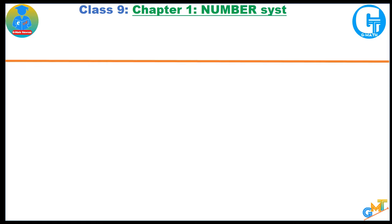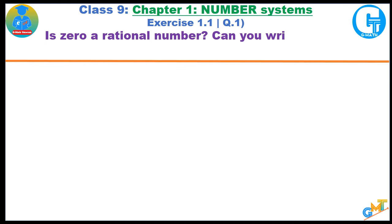Now today we are starting the solution series for class 9, chapter 1, number system, exercise 1.1. Question 1 is: Is zero a rational number? Can you write it in the form of p upon q where p and q are integers and q is nonzero?